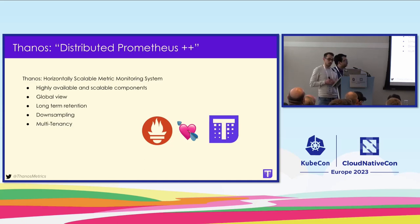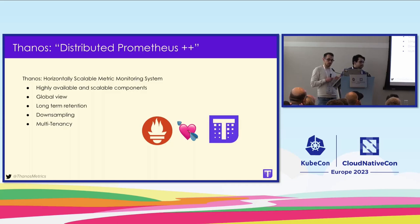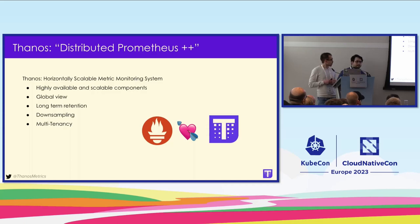This is where Thanos comes in. These are the gaps that Thanos tries to fill out. It has features such as a global view, long-term retention, and down-sampling built in over time, so it can reduce the resolution of scraped samples. It also has some nice multi-tenancy features.